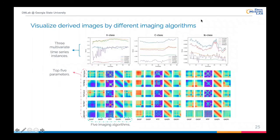Here are the visualization results of images derived by 5 imaging algorithms, with 3 multivariate time series instances and top 5 selected parameters. Comparing GASF and GSFR, we can find that GSFR has a stronger linear tendency by multiplying the weighting matrix. However, GDFR doesn't have significant differences compared to the original GADF images. We still want to explore this in the future, but two conclusions can be safely inferred. First, adding radial information into the construction of GASF and GADF is useful — it can provide more information for the CNN-based classifiers. Second, different imaging algorithms might need different weighting matrices to obtain improvements, which can also be explored in the future.